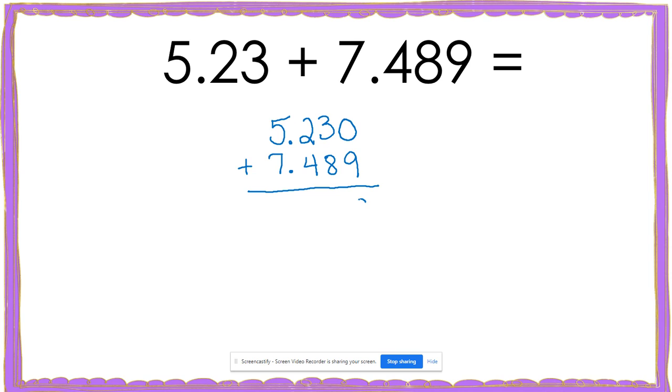Zero plus nine is nine. Three plus eight is 11. So I write my one and carry my one. One plus two is three.